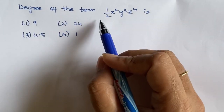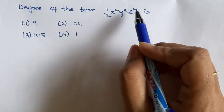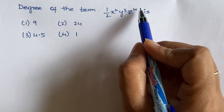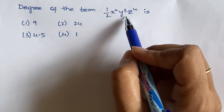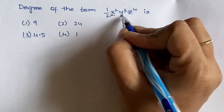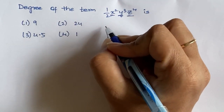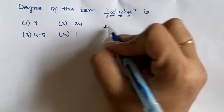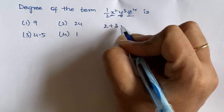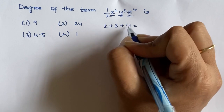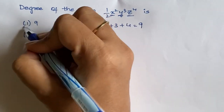Degree of the term one-half x squared y cubed z to the power 4. The degree is the sum of powers of all variables. So degree equals 2 plus 3 plus 4, which gives 9. The degree of this term is 9.